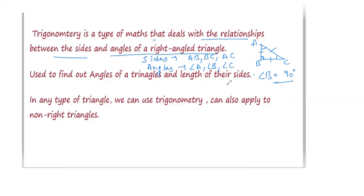Next, why we use trigonometry: we use it to find out the angles of a triangle and the lengths of their sides. In a triangle there are either sides or angles, so you will either find the sides or find the angles by using ratios. We can apply trigonometry in any type of triangle, not just right angle triangles.